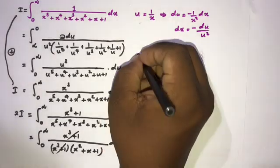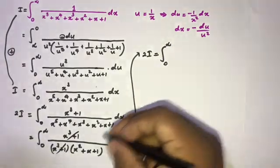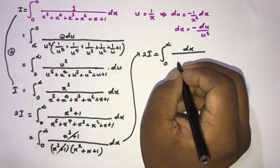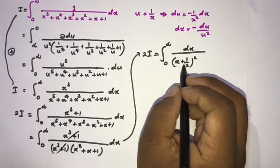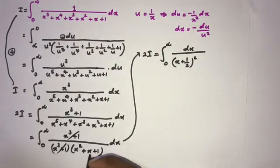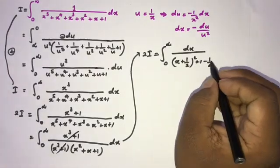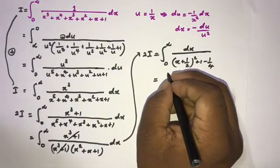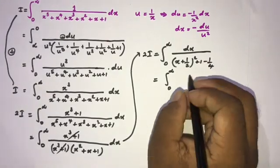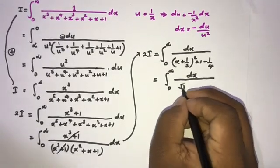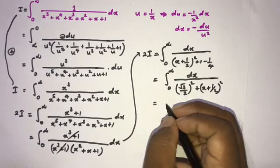The x cubed plus 1 factors cancel, so 2I equals the integral from 0 to infinity of 1 over x squared plus x plus 1, dx. We complete the square: x squared plus x plus 1 equals x plus one-half squared plus three-fourths, which is (x + 1/2)² + (√3/2)².